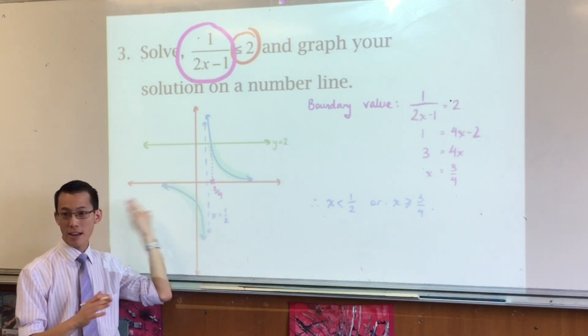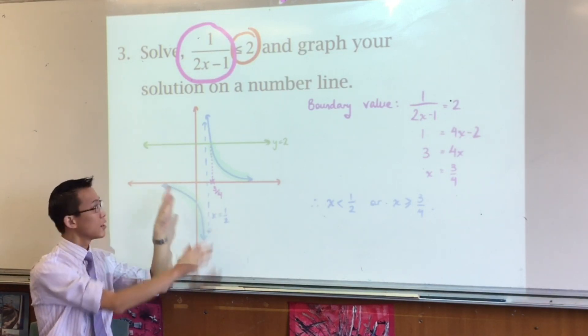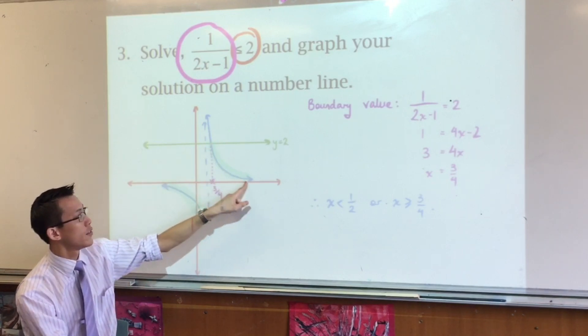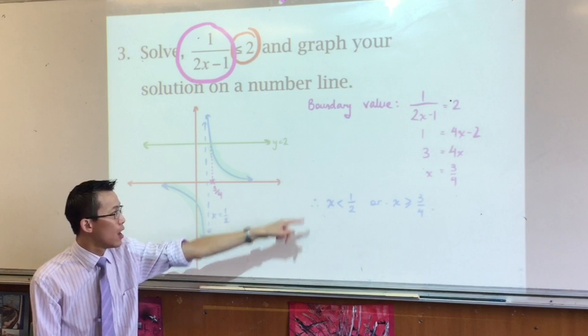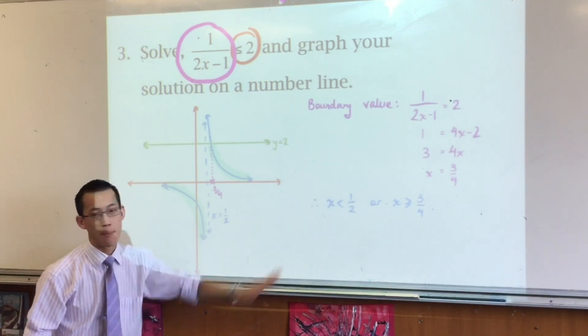So therefore, to the left of that, that's all good. That's all underneath 2. And then I need to work out this point of intersection, which is exactly what I did over there on the right-hand side. Once I know where everything's happening, I'll pass my answer.